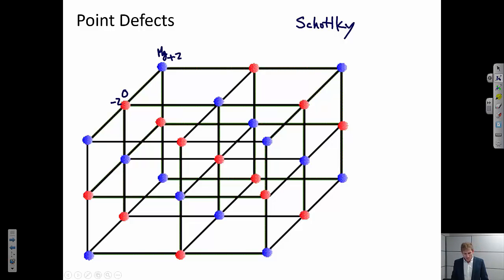And this is when we have a paired vacancy. So let's say both this magnesium and this oxygen atom are missing. So we're missing a plus two charge and we're missing a minus two charge. So we have maintained charge balance.